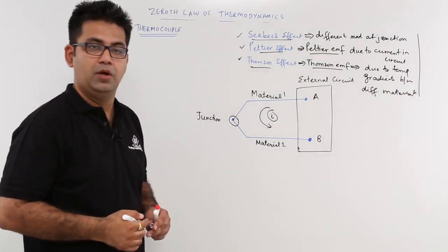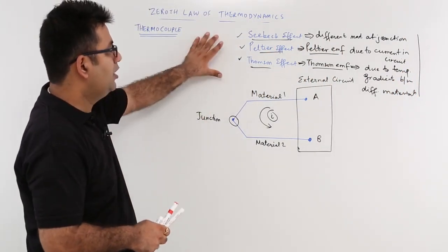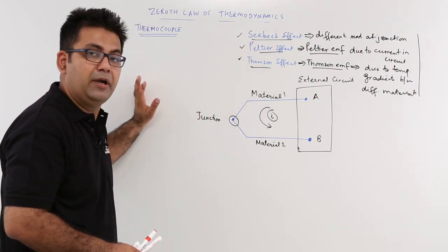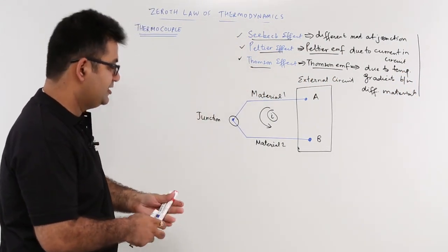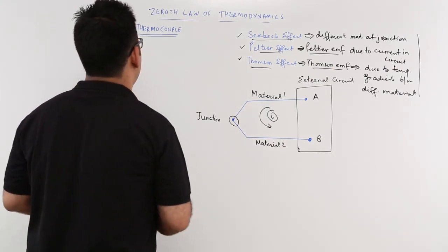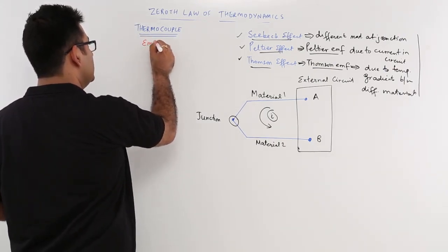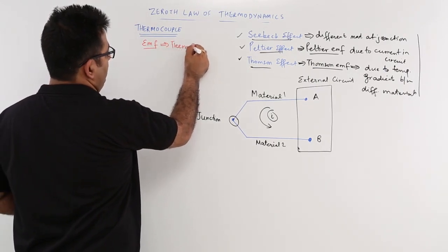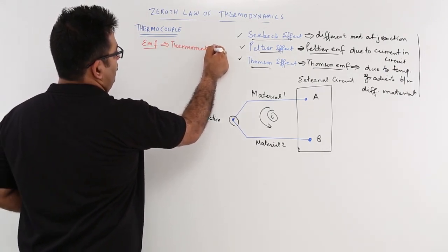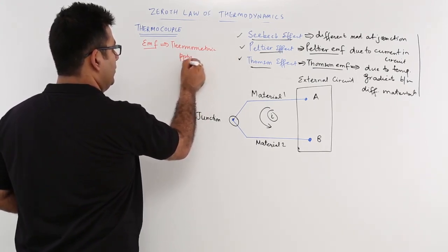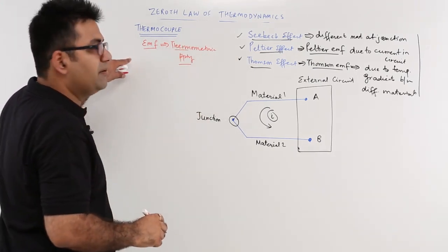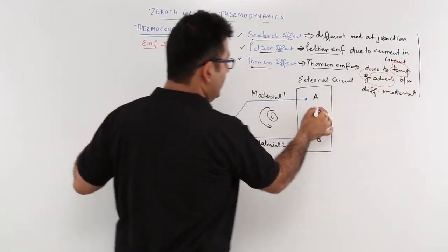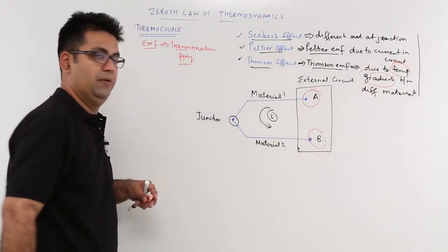So this is how this thermocouple will work. This means the thermometric property in this is basically your EMF. So as the EMF changes, that is your thermometric property. As the EMF changes, it indicates that there is some temperature change happening at these two ends as well.